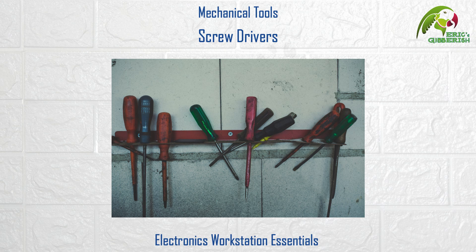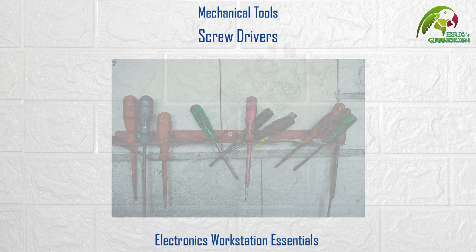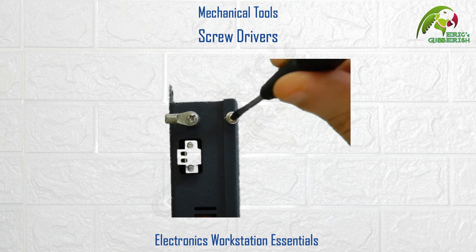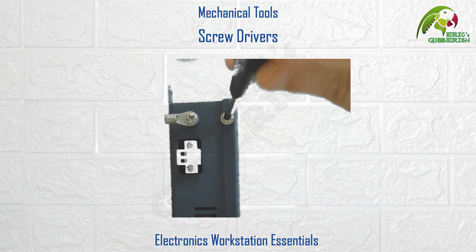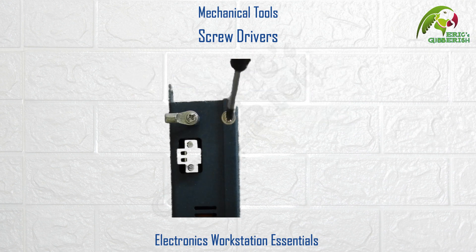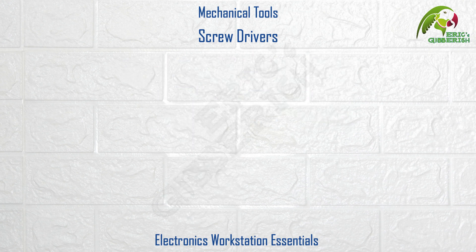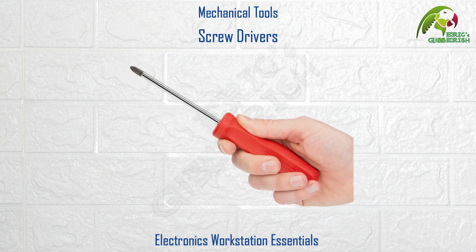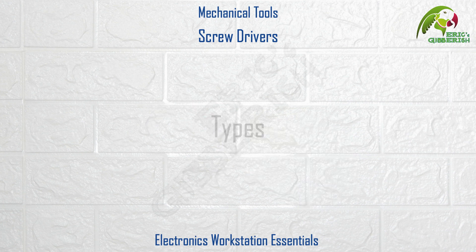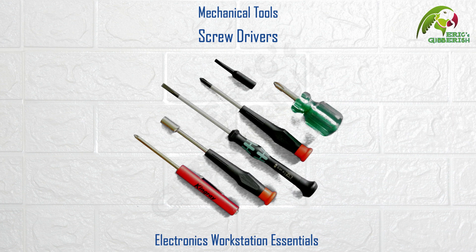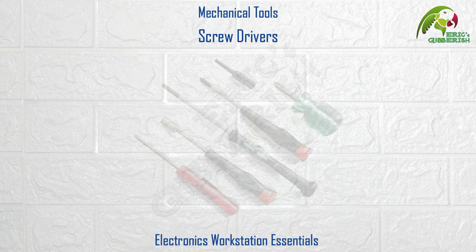Screwdrivers. So let's begin with screwdrivers. They are used for the tightening or installation and the loosening or removal of screws. They have three parts mainly: the handle, the shank, and the head. Now there are various types of screwdrivers available, mainly based on its head type or on its size.